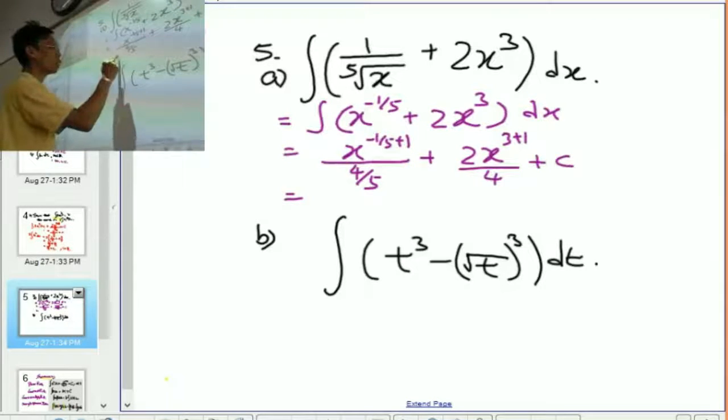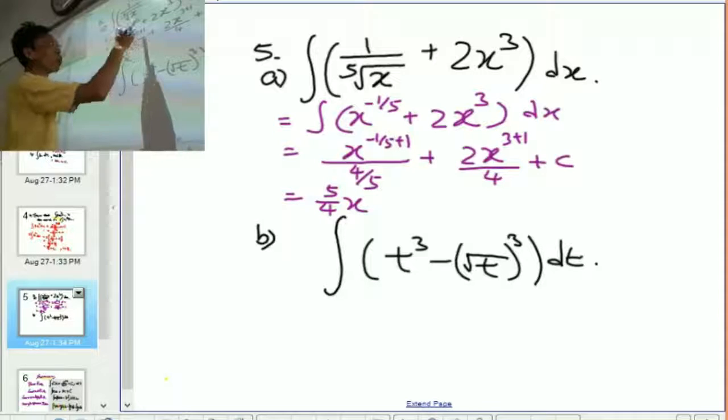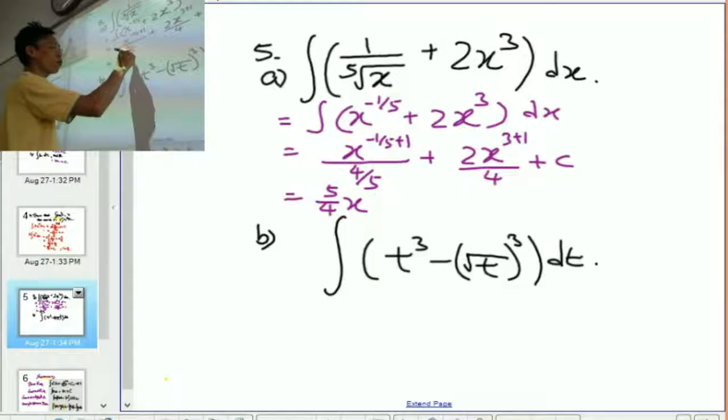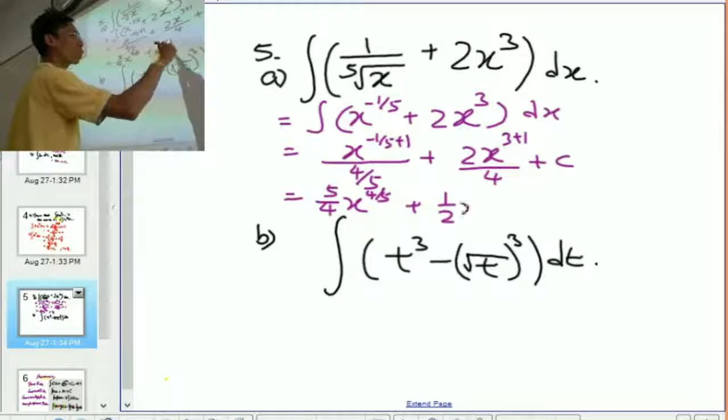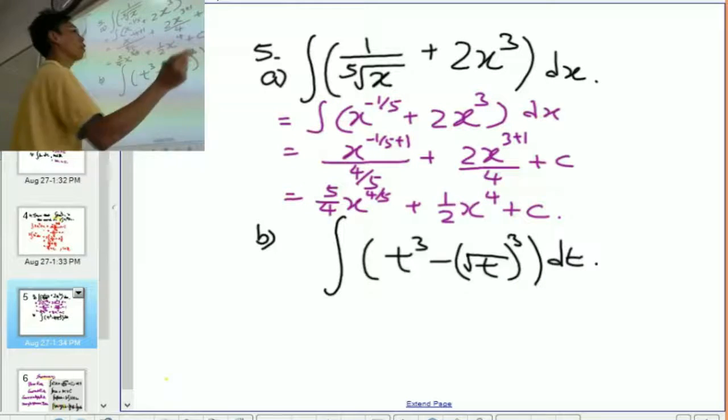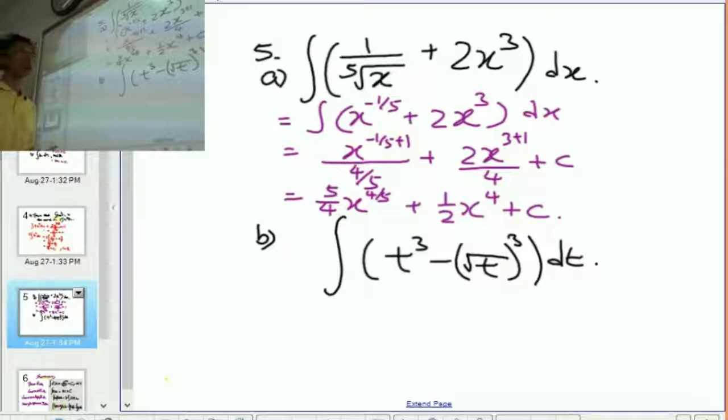So, answer to this is 5 over 4x to the power of 4 fifth. And then, plus 2 over 4 is half x to the power of 4 plus c. That's the answer.